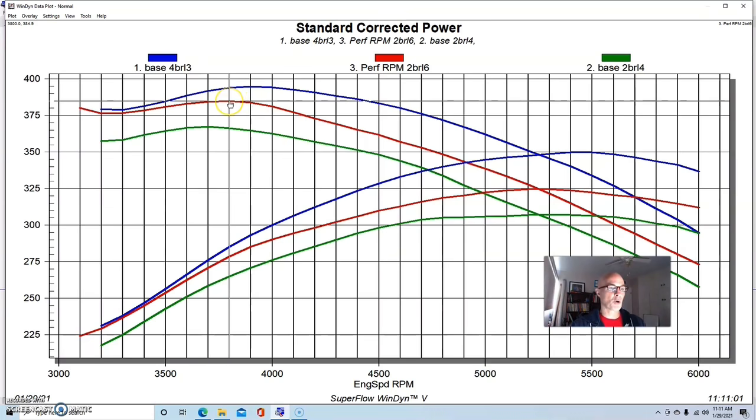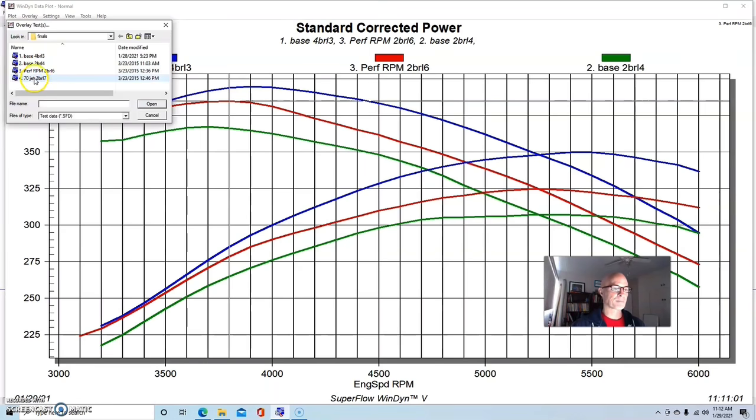Peak torque was up to 385 foot pounds of torque, so nearly matching the torque output below 3500 to the four barrel combination. So this was a good step up. The RPM Air Gap is a really good combination on a small block Chevy for this kind of power range. We also on the dual plane adjusted the two barrel carburetor. It had a slide-on adapter because all we did was run the two barrel carburetor on the four barrel flange with an adapter, and we were able to slide the carburetor back and forth.